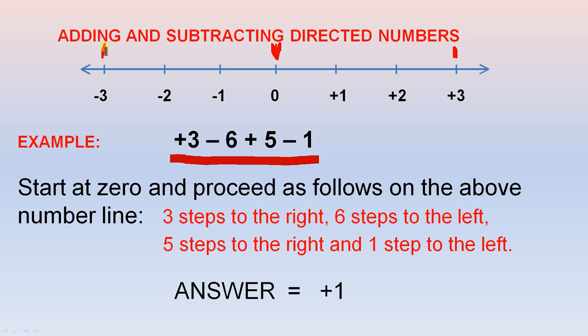Positive five tells you that we proceed five steps to the right: one, two, three, four, five. We are here. And the minus one tells you that you proceed one step to the left. We finish here. And this is your answer. So your answer is positive one.